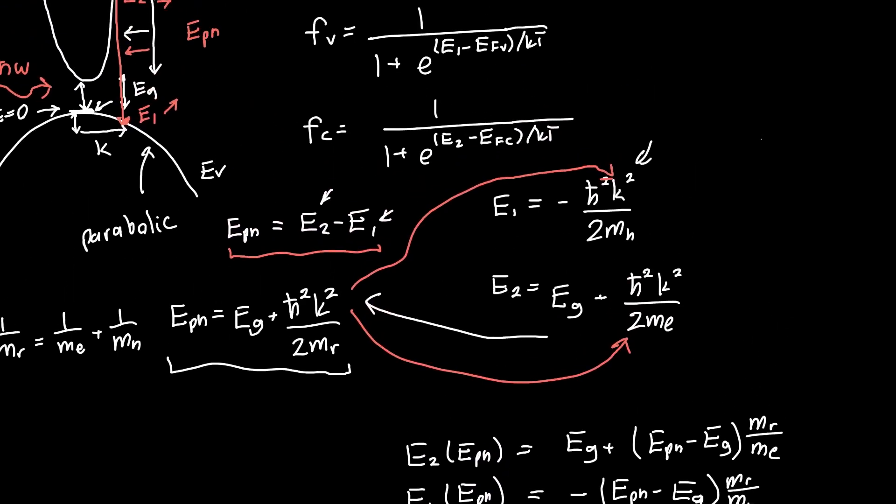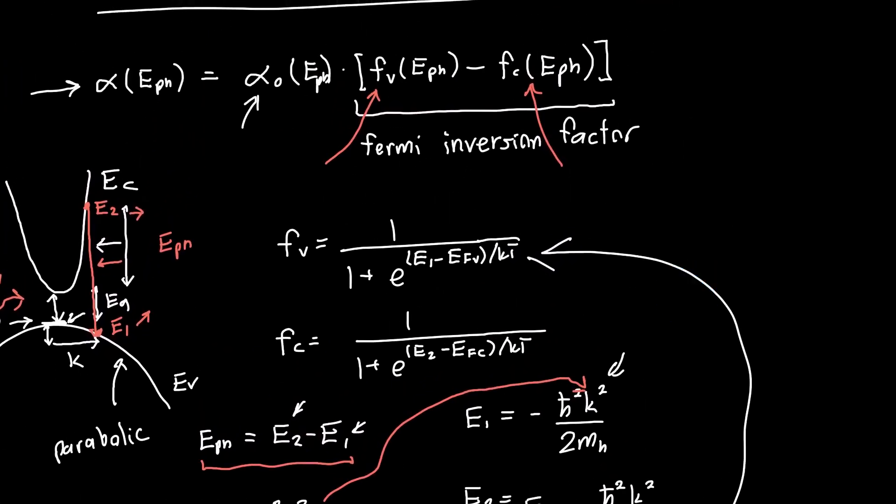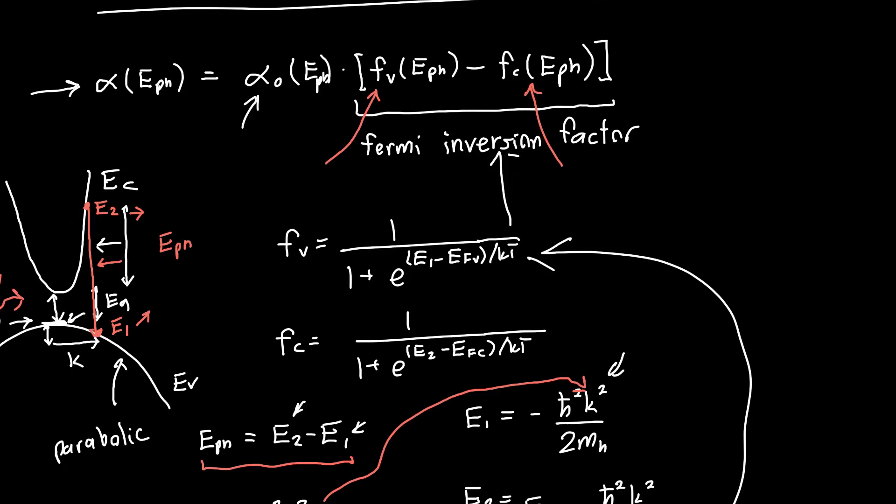If you felt so inclined, you could now plug these back into our Fermi factors Fv and Fc, which you can plug back into the Fermi inversion factor, and you'll get a pretty complicated, nasty-looking equation. But what's most interesting about this Fermi factor is that it can be negative, and it can also be zero.